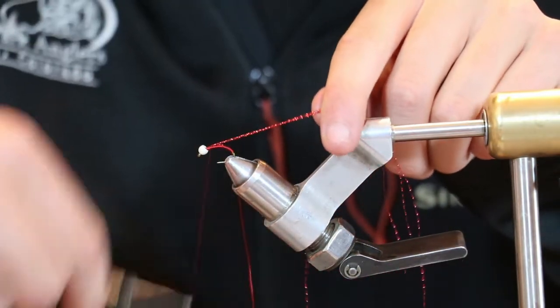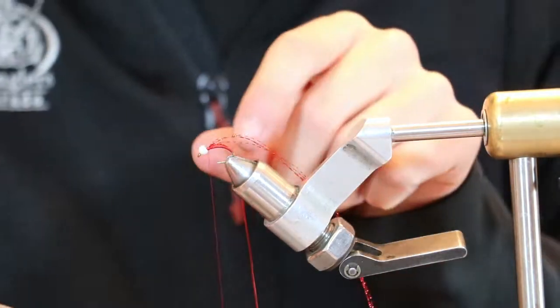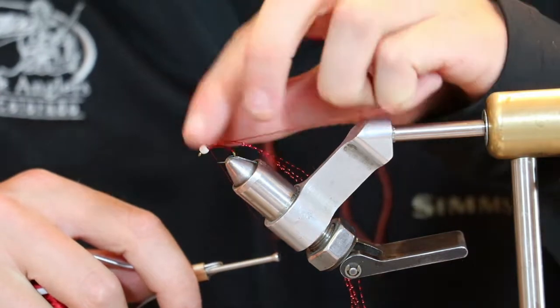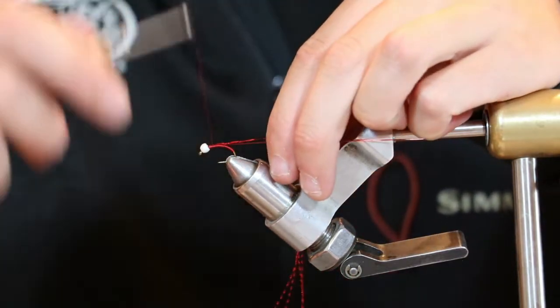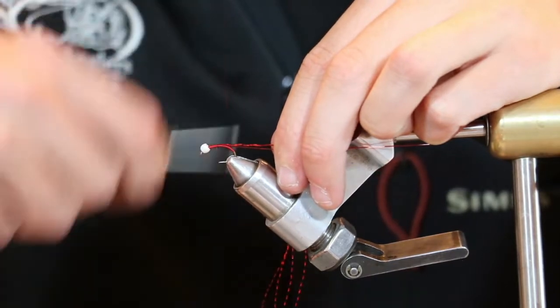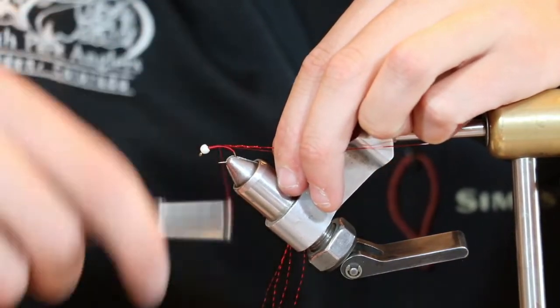Then what I like to do is I'll get that started. Then you'll grab that red stretch tubing and pull it fairly tight. Put a little bit of tension on that crystal flash as well, and just start making even touching thread wraps going down the body.